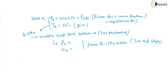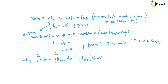The work done during the process equals P_lift × (V₂ − V₁). Since P_lift is constant at 300 kPa, work W = P_lift × m × (v₂ − v₁). Substituting the values for v₂ and v₁, the work comes out to 10 kilojoules.